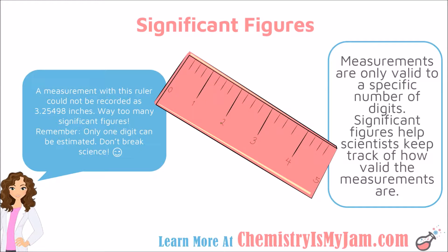The ruler on your screen has a major unit here and here with three small increments in between — it's really not a very accurate ruler. If I were to take a measurement using this ruler and record my measurement as 3.25498 inches, that is way more accurate than my ruler is. I've indicated to anyone reading my data that I used a much better ruler than I actually used. Significant figures are a way of keeping track of how valid your measurement is and to what degree your equipment was able to measure accurately.